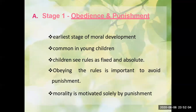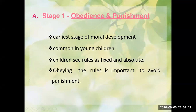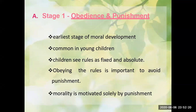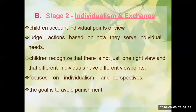So those are the two stages of the pre-conventional level. Stage one, obedience and punishment, starts from ages 4 to 10, where children follow the rules because they are afraid of punishment. In the second stage of the pre-conventional level, their point of view begins to develop, their focus is on individualism and perspective, and they learn how to avoid punishment. That is our pre-conventional level.